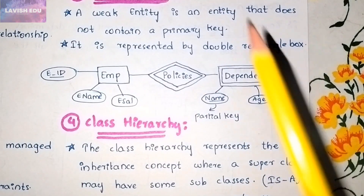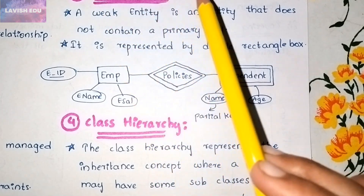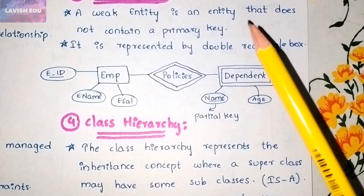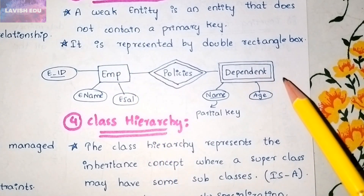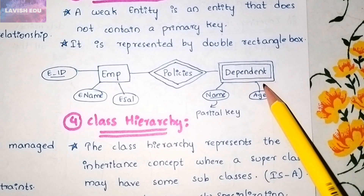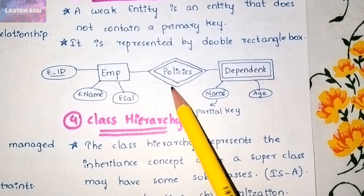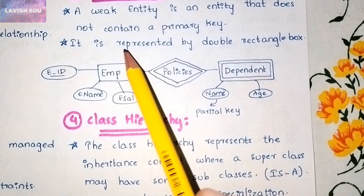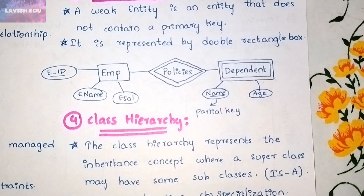Next we have weak entities. A weak entity is an entity that does not contain a primary key, so weak entities have no primary key values. They are represented by double rectangles. In the example, Employee is a strong entity and Dependent is a weak entity. The relationship formed between a strong and a weak entity is represented by a double diamond shape.